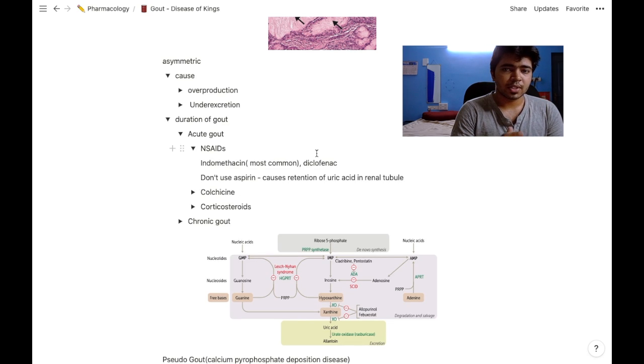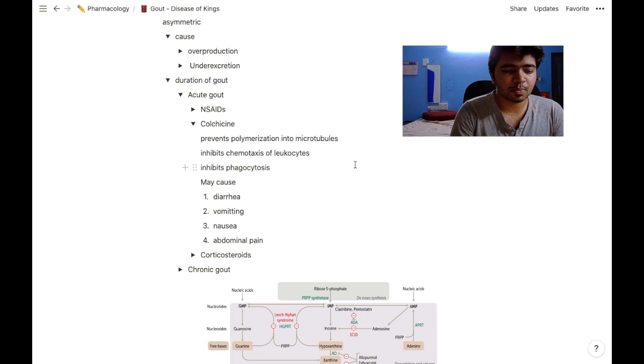The most common NSAID used is indomethacin. All NSAIDs can be used except aspirin, because aspirin causes retention of uric acid in the renal tubules.